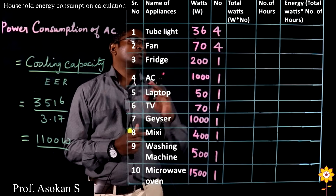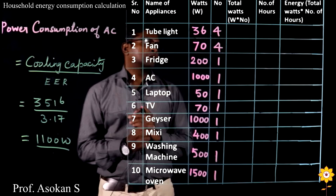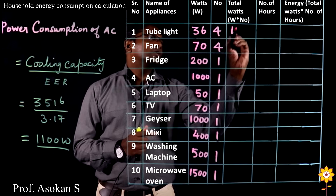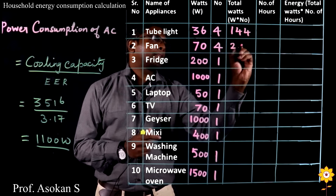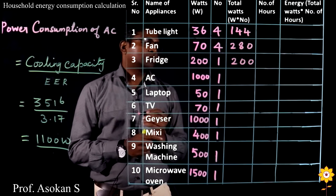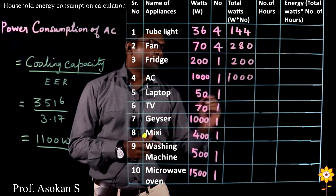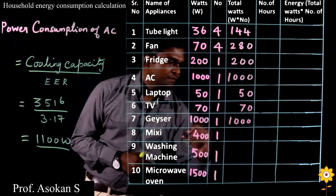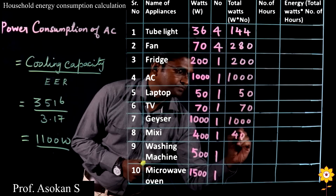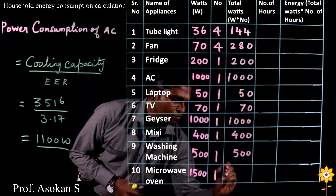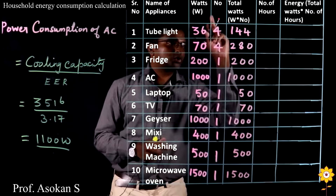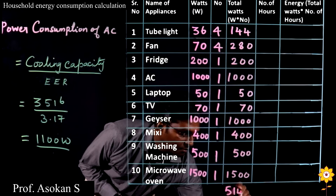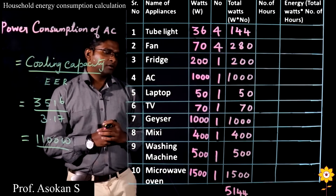Then we calculate total watts — how many total watts are consumed by each appliance. For tube light: 36 Watt multiplied by 4 units equals 144 Watt. Fan: 280 Watt. Fridge: 200 Watt. Then multiplying through: AC is 1000 Watt, geyser 1000 Watt, washing machine 500 Watt, and microwave 1500 Watt. So the total power absorbed by all the home appliances is 5144 Watt.